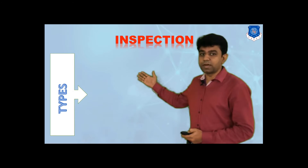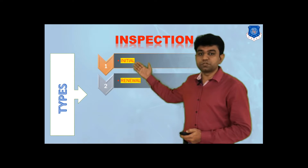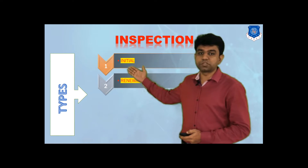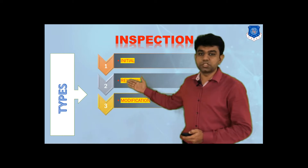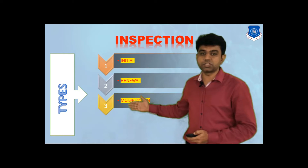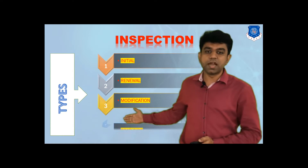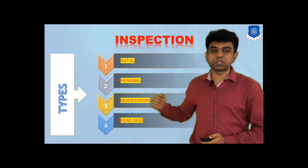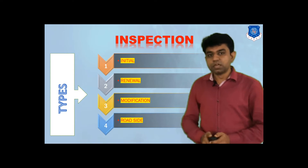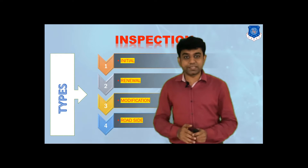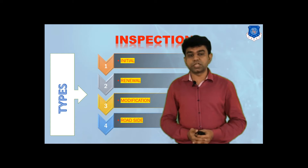As far as our automobile is concerned, we have four different types of inspection: initial inspection, renewal inspection, modification inspection, and the fourth one is roadside inspection. Let us understand what each of these means.